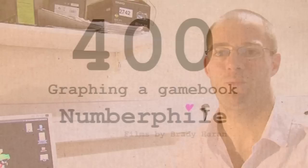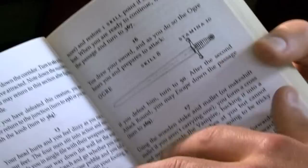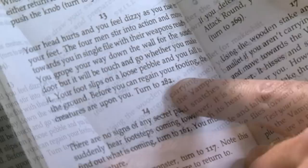Fighting Fantasy books written by Steve Jackson and Ian Livingstone, where you get to choose your own route through the book. So this book isn't broken up into pages, but rather it's broken up into paragraphs, sections. And at the end of each section, you get to choose, as always, turn to section 282.